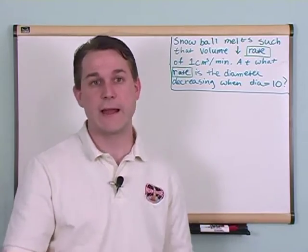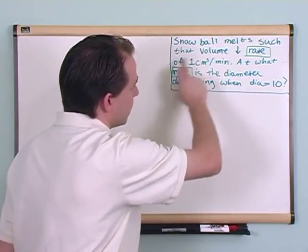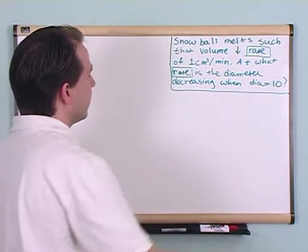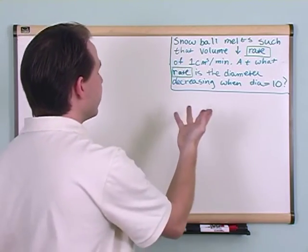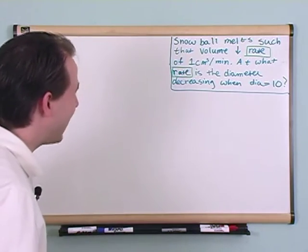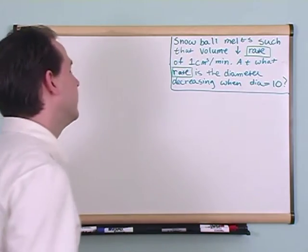Here they're telling us the derivative of the volume with respect to time, the rate of change of the volume, is given by this here. And it's also asking us what is the derivative with respect to time of the diameter. In other words, how fast is the diameter changing with respect to time at exactly the point when the diameter is equal to ten.